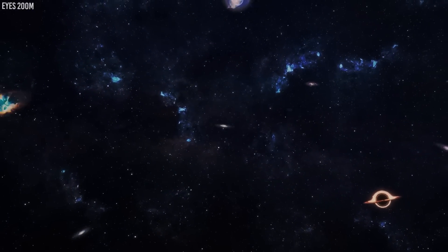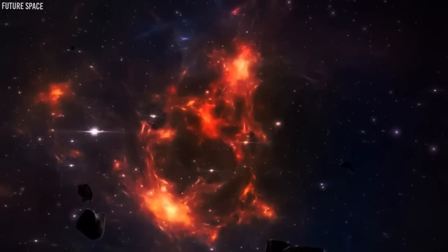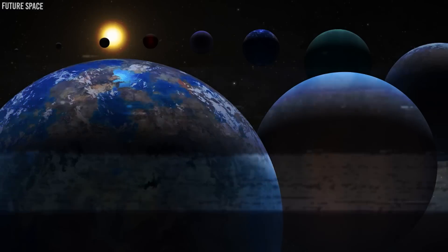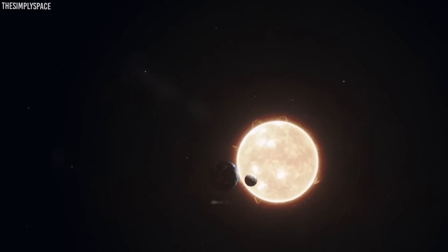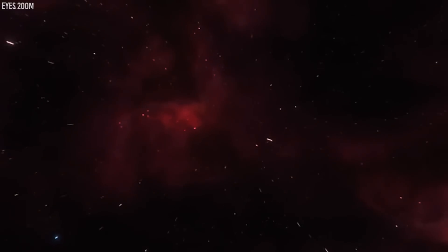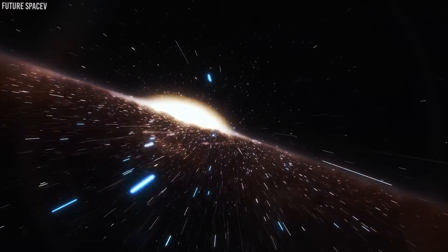This celestial tilt means that the KBOs don't just dance on the same plane as the planets. They have a different angle, like dancing to their cosmic beat. This makes them stand out as cosmic oddballs, adding a touch of excitement to our solar system's dance party.